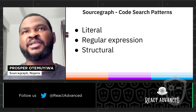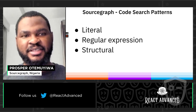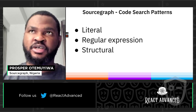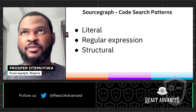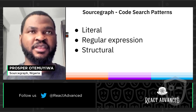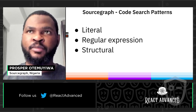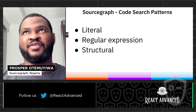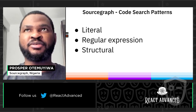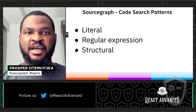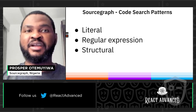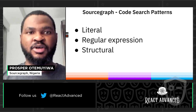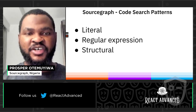Let's talk about the different code search patterns that Sourcegraph allows you to use. There's literal code search, there's regular expression, and there's structural. If you've used VS Code or Sublime locally, it allows you to search for different things — open your command, search for a file, search for a function. With Sourcegraph, you don't have to clone repositories anymore. You don't have to have them on disk. Once you're connected to Sourcegraph, you can search for them on the web, on the cloud, or you can have your own self-hosted version of Sourcegraph.